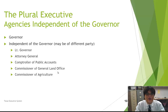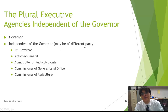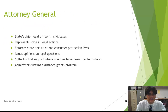The plural executive establishes these independent offices to check and limit the governor's power. It's very interesting that they could also be of different parties, though traditionally they're not. The lieutenant governor is essentially second in command — the vice president — so let's move on to the attorney general.